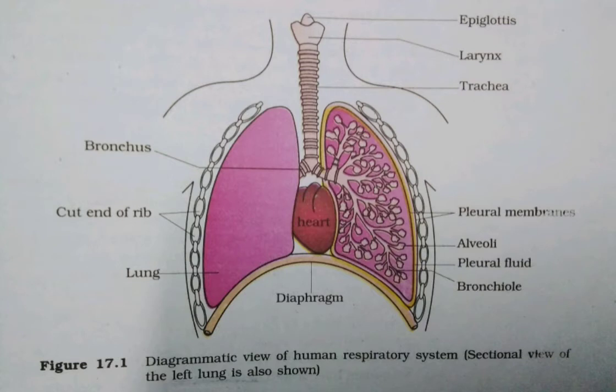In the alveoli where PO2 is higher, O2 gets bound to hemoglobin, which is easily dissociated at the tissues where PO2 is low. At the tissues, PO2 is low and PCO2 and H+ concentration are high. Nearly 70 percent of the CO2 is transported as bicarbonate (HCO3−) with the help of the enzyme carbonic anhydrase.